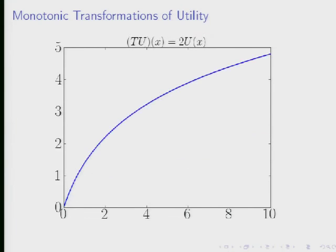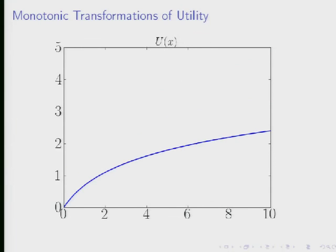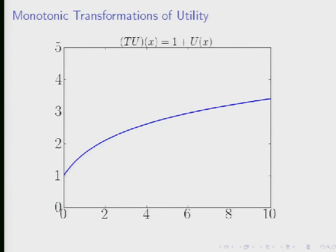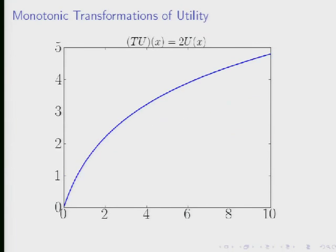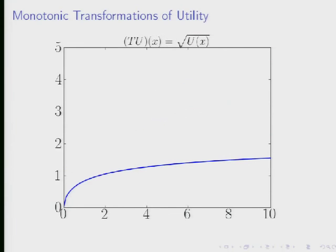The key feature of these different transformations is that in this commodity space they're all increasing. We knew in the original utility function that the consumer would prefer 4 to 2, for example, because 4 gets a higher level of utility than 2 does. And that same property is preserved in all these transformations. The utility at 4 is always higher than the utility at 2, even when you take the square root.